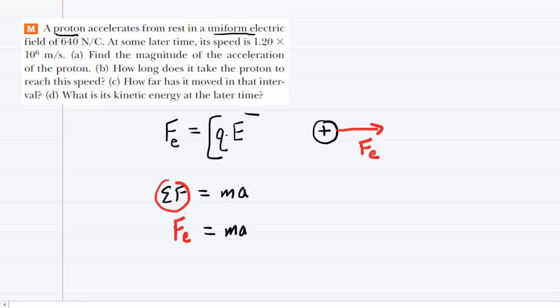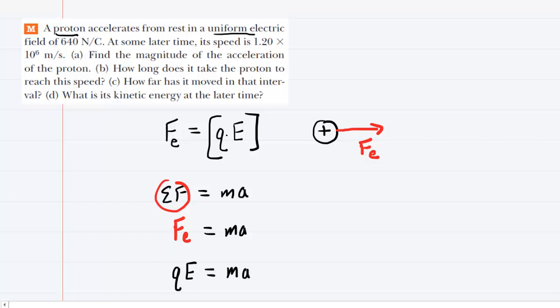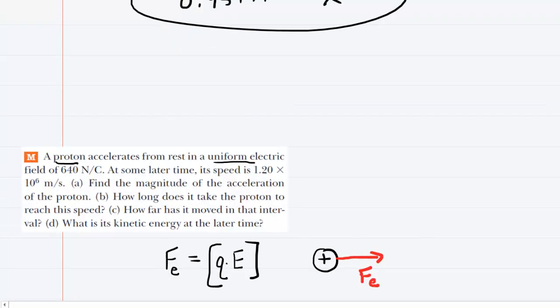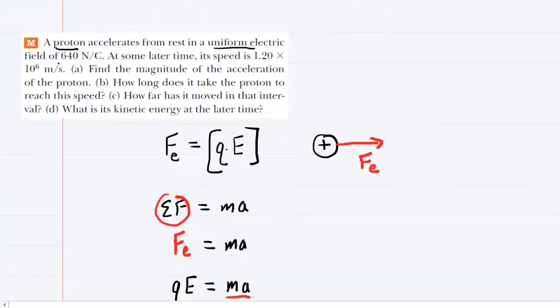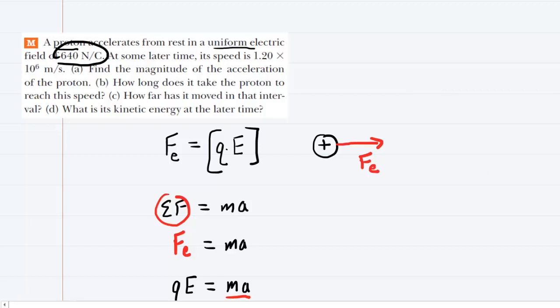Now we just noted that Fe is equal to Q times the electric field, so we'll make a substitution for Fe in that way. In part A we want to find the acceleration, so if we're going to find acceleration, we'll divide both sides of this equation by the mass, and therefore we can see the acceleration equals Q times electric field divided by the mass of the proton. All we need to do is fill in the known values.